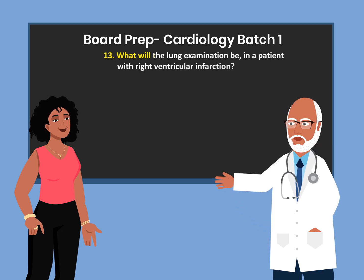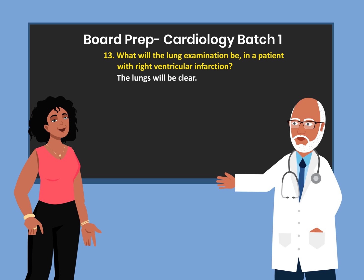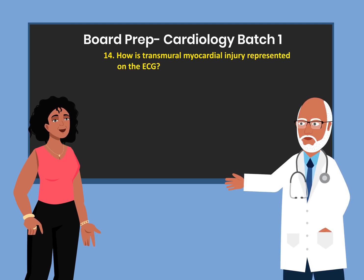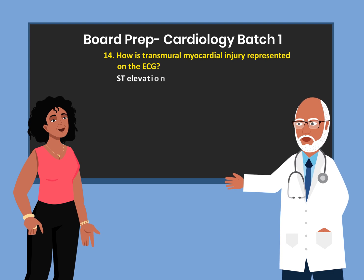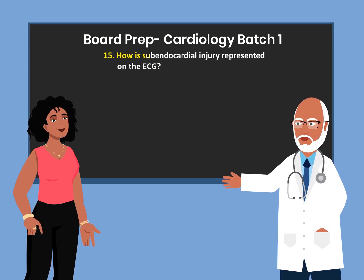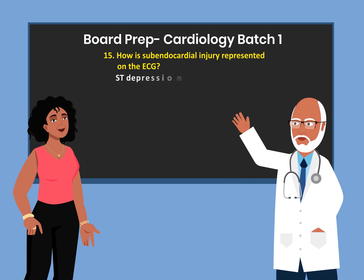What will the lung examination be in a patient with right ventricular infarction? The lungs will be clear. How is transmural myocardial injury represented on the ECG? ST elevation. How is subendocardial injury represented on the ECG? ST depression.